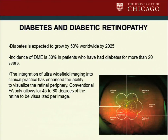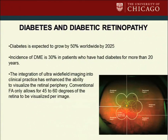Diabetes is a worldwide epidemic. It's expected to grow by 50% worldwide by the year 2025, and the Asia-Pacific region is very much involved in this. Incidence of DME is 30% in patients who have had diabetes for more than 20 years. Conventional fluorescein angiography only allows visualization of 45 to 60 degrees of the retina per image.